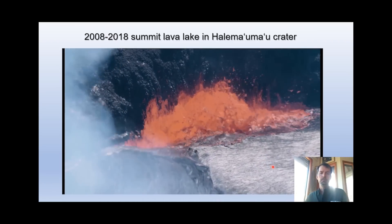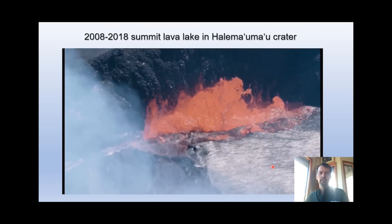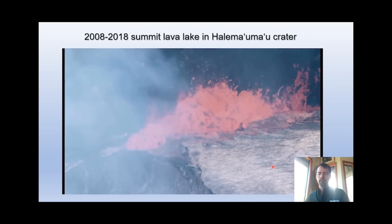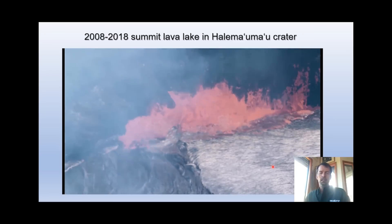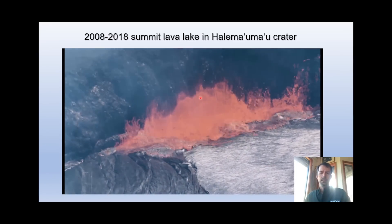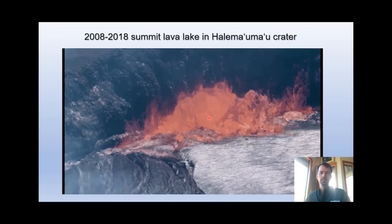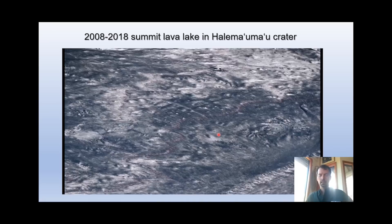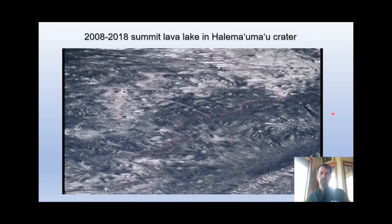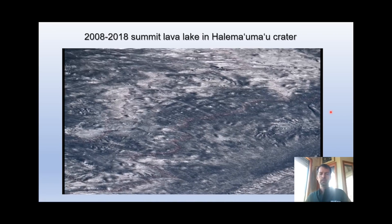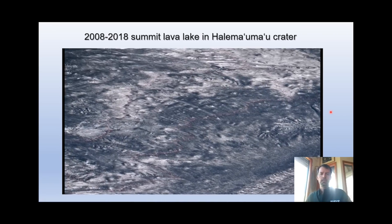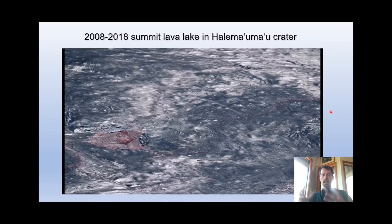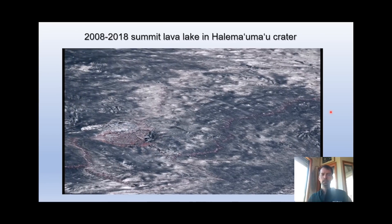Here's a zoomed-in view of the spattering, which is pretty fascinating - this was happening almost constantly in the lake, maybe 10 yards high or so. You can see the undulating lava surface as those bubbles break. The lava in the lake is very gas rich - you can see it bubbling here, and here's a slug of gas that reached the surface and burst.